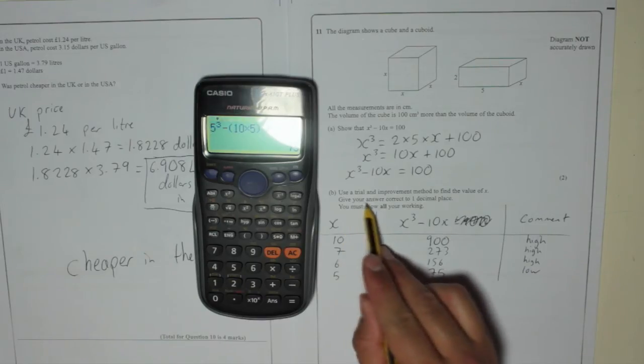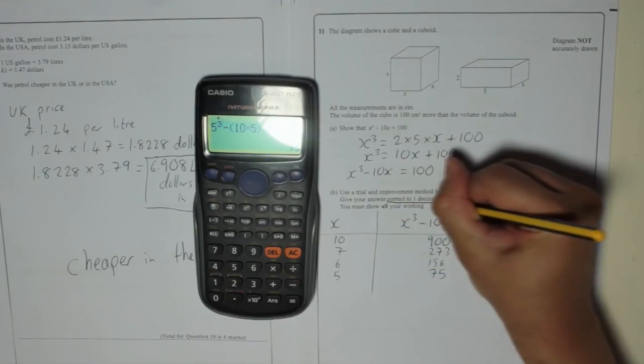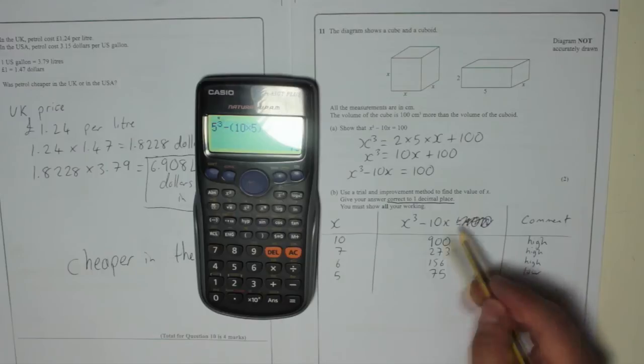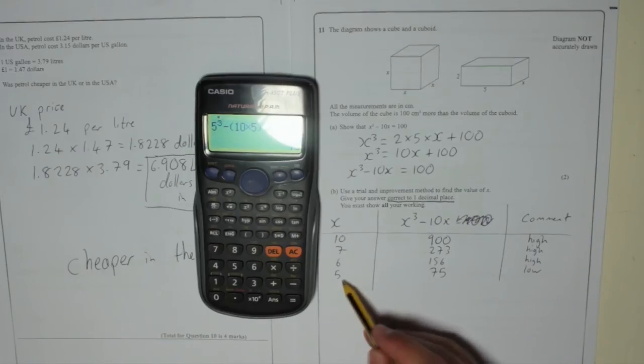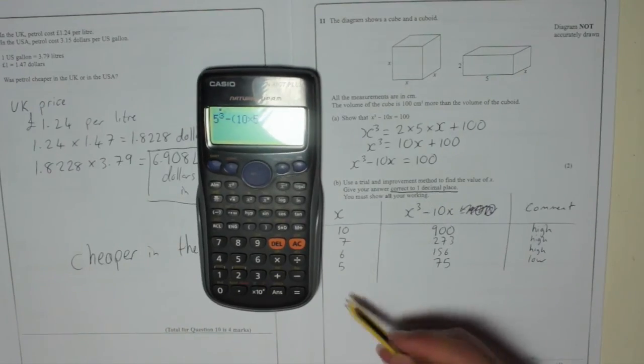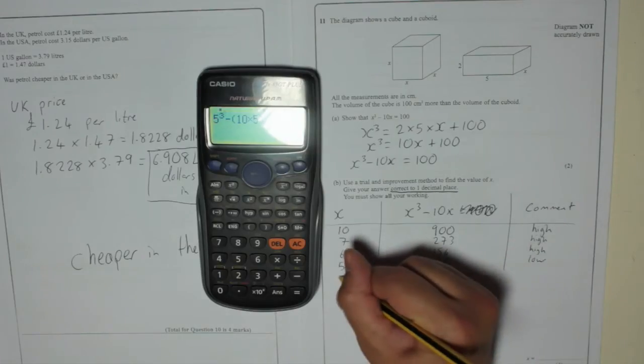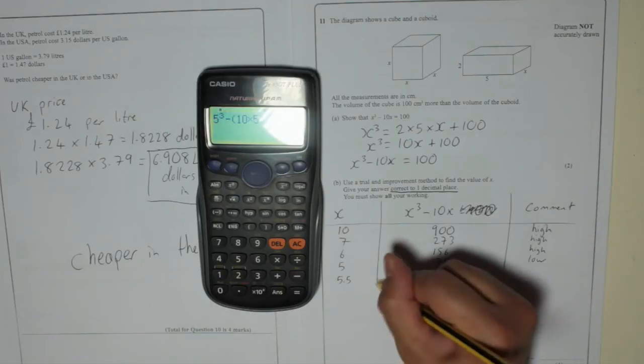But we need an answer correct to one decimal place. That doesn't mean we're going to get within one decimal place of 100. It means this number over here has to be correct to one decimal place. You'll see what I mean soon. So we know it's in between 5 and 6. I'm going to go halfway. I'm going to say 5.5. We'll try that.